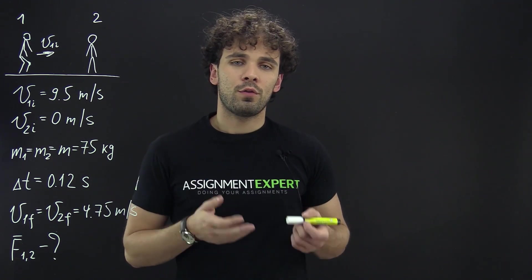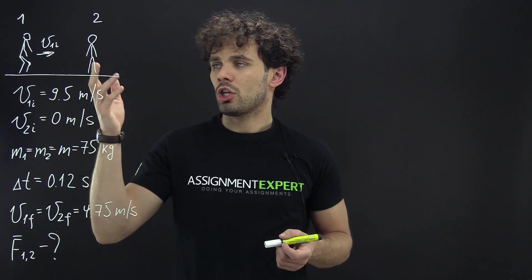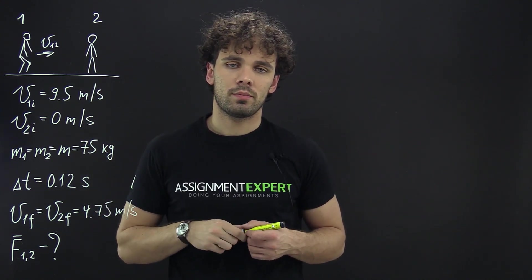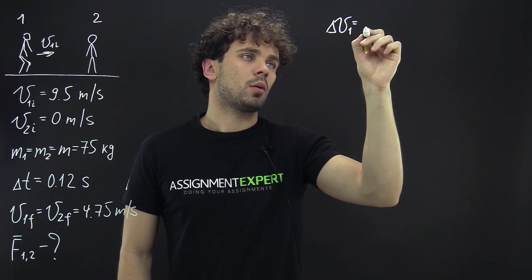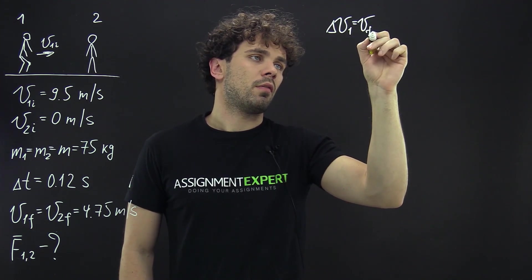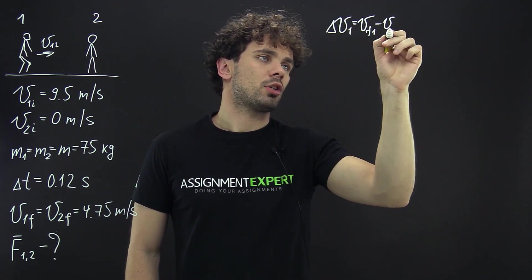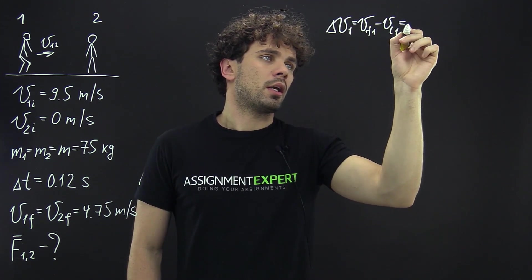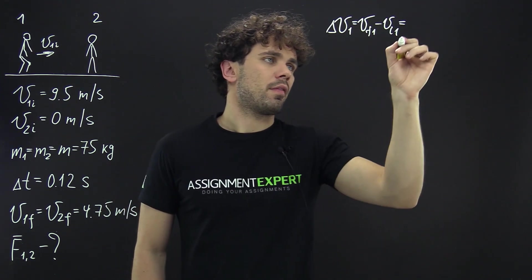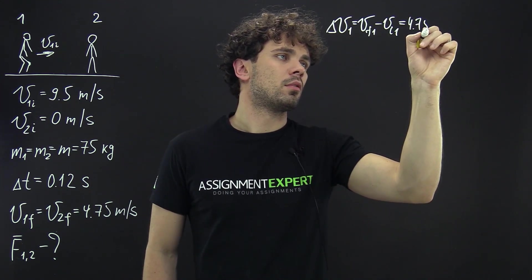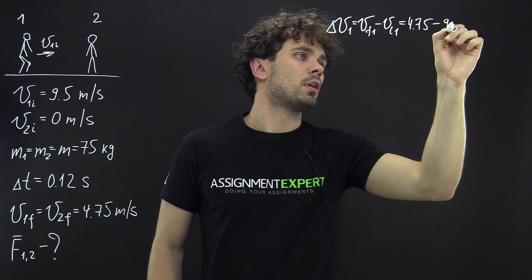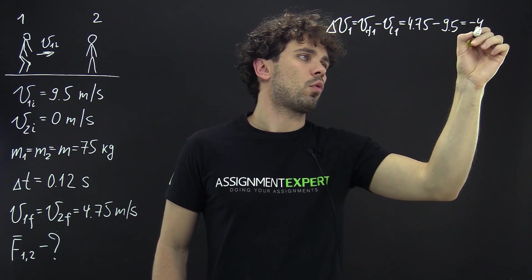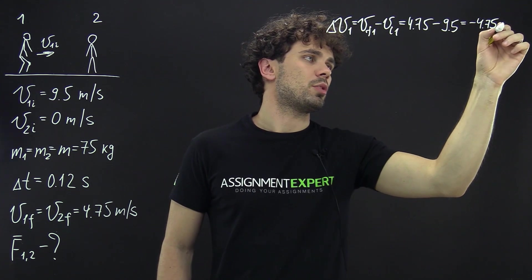So, first of all we need to find the change of the speed for each skater. For the first skater we have delta V1 equals the final speed of the first skater minus his initial speed and equals 4.75 minus 9.5 and gives us negative 4.75 meters per second.